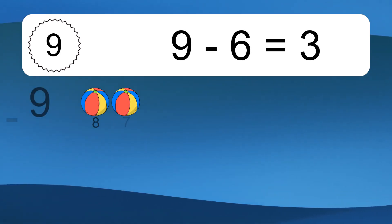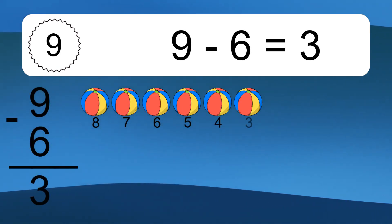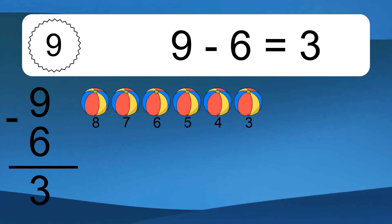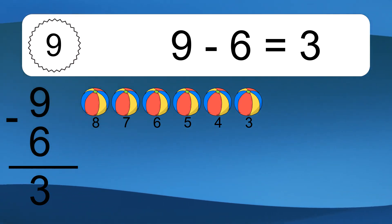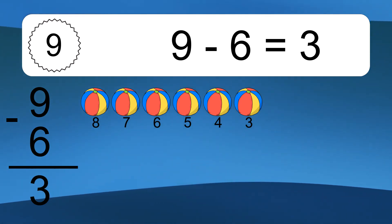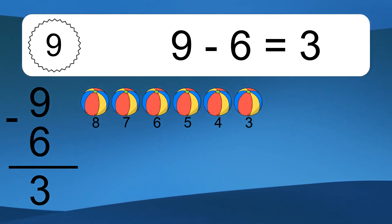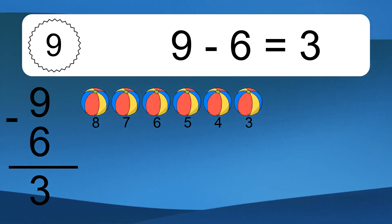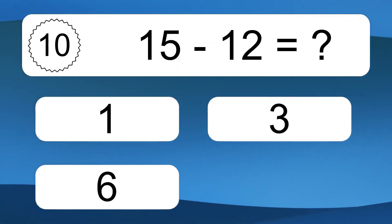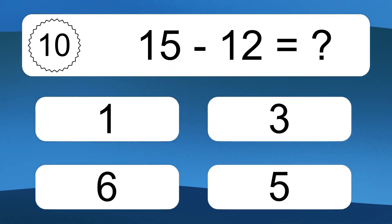9 minus 6 equals what? 9 minus 6 equals 3. Let's count it: 8, 7, 6, 5, 4, 3.